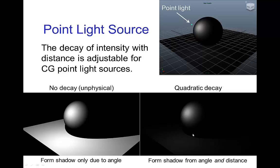On the right, we have a more realistic point light source like as if it was from say a candle. And then the form shadow is both from angle and distance, so you see very different type of illumination in these two cases.